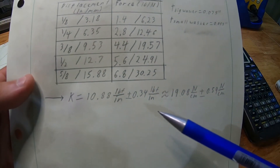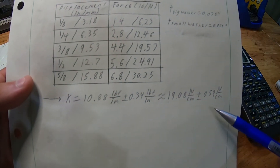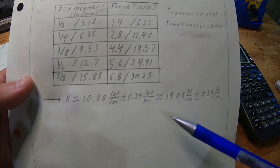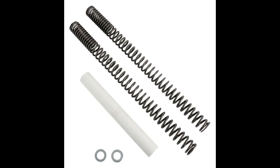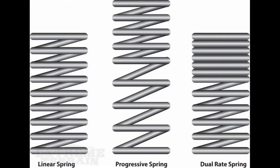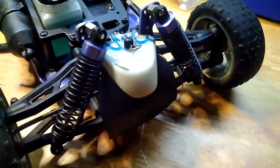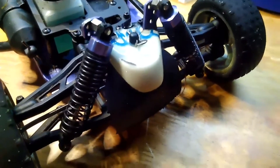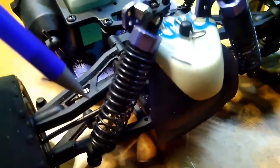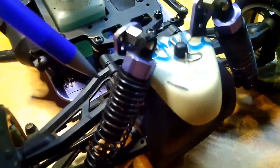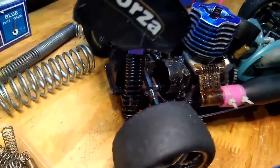Quickly mentioning something I didn't talk about earlier: in the spring world there is something called the progressive spring, where the spring rate is variable. In some cases it'll be due to the active versus inactive coils or how it's wound. There's actually a lot more to it, and they're commonly used in suspension applications.